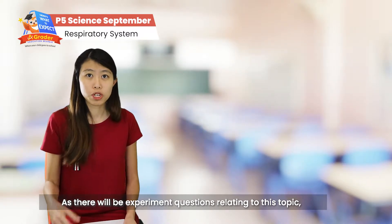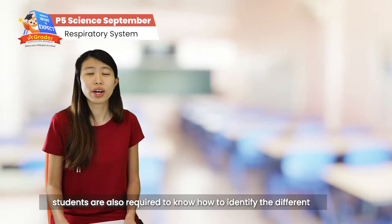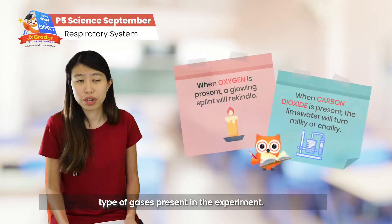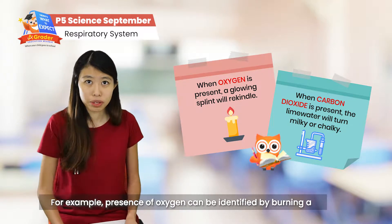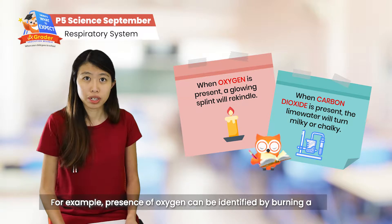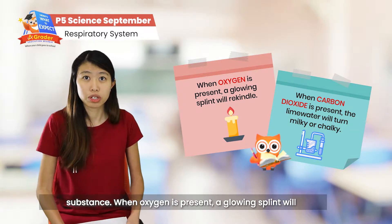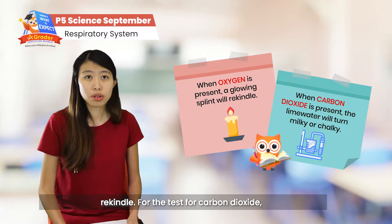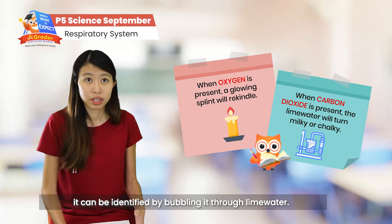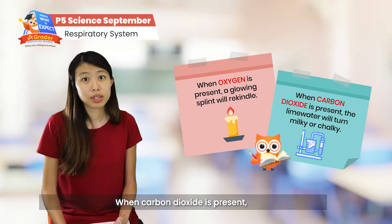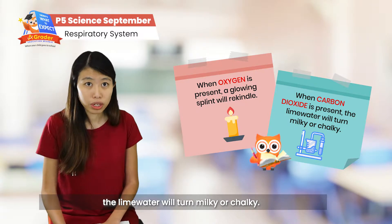As there will be experimental questions relating to this topic, students are also required to know how to identify different types of gases present in an experiment. For example, the presence of oxygen can be identified by using a glowing splint — when oxygen is present, the glowing splint will rekindle. For carbon dioxide, it can be identified by bubbling the gas through lime water. When carbon dioxide is present, the lime water will turn milky or chalky.